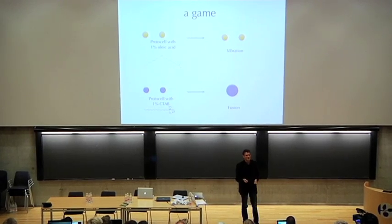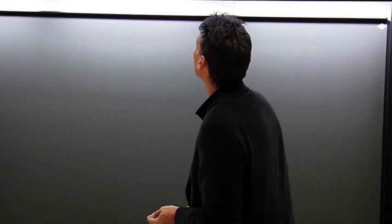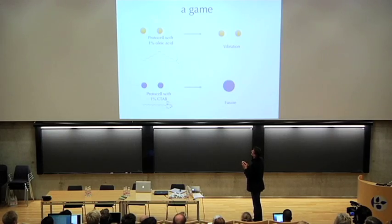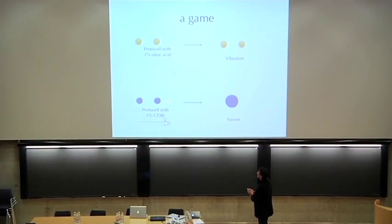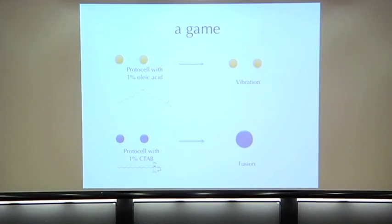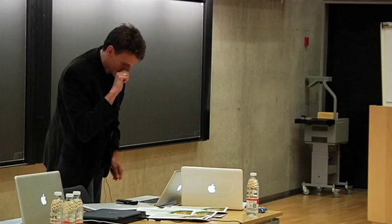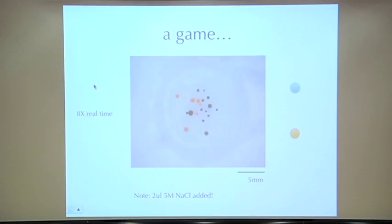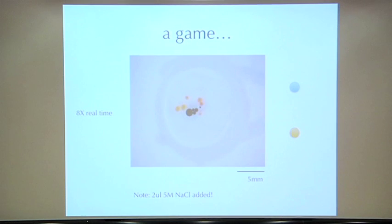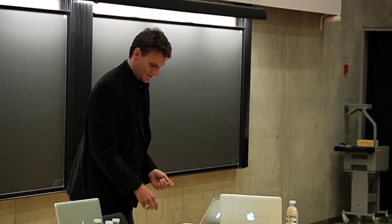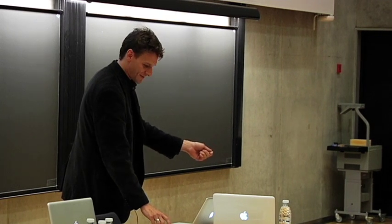Once we start developing these models we can start playing with them. In this game we have two different players. These protocells have one kind of chemical and they're orange; these have one kind and they're blue. The rules are simple: add a chemical activator to the orange ones and they start vibrating wildly; add the same chemical to the blue ones and they come together and fuse into larger and larger droplets. Here are the populations of protocells — you can see the orange ones vibrate and the blue ones fuse. That's the rule of the game.